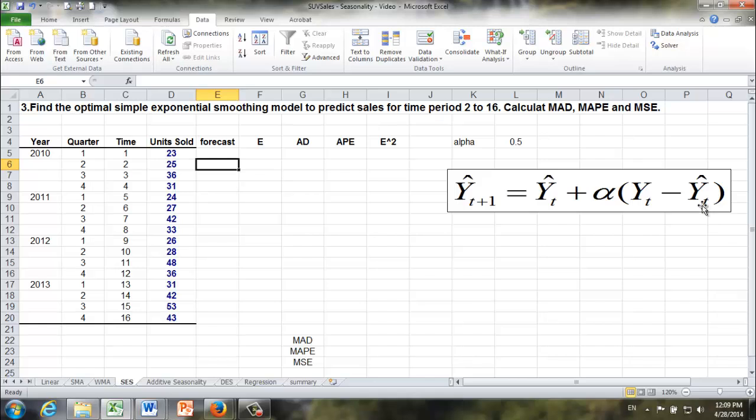So the convention is we set the very first forecast to be equal to the actual sales of the very first time period. Sometimes this is called initialization.